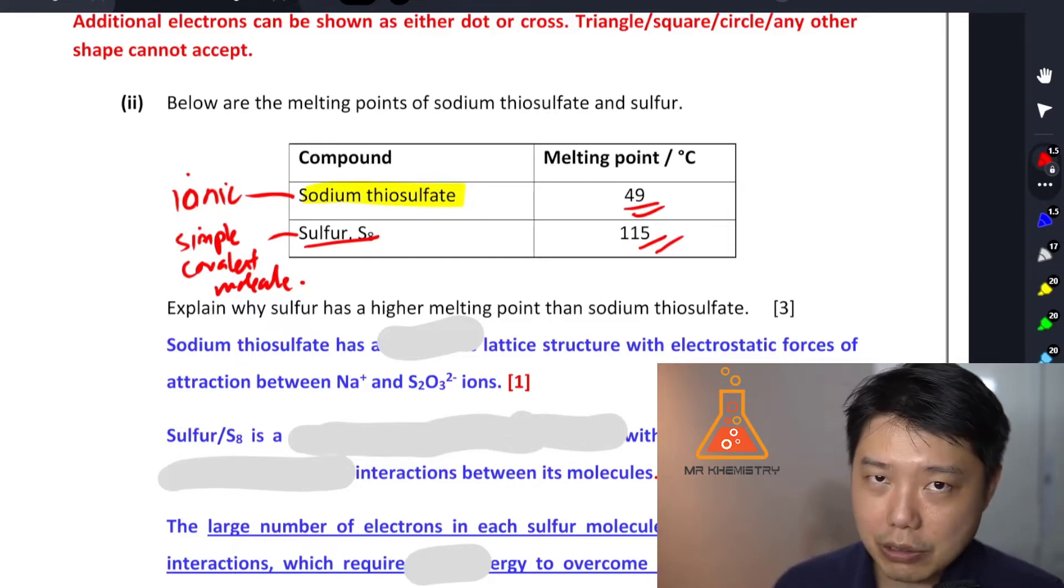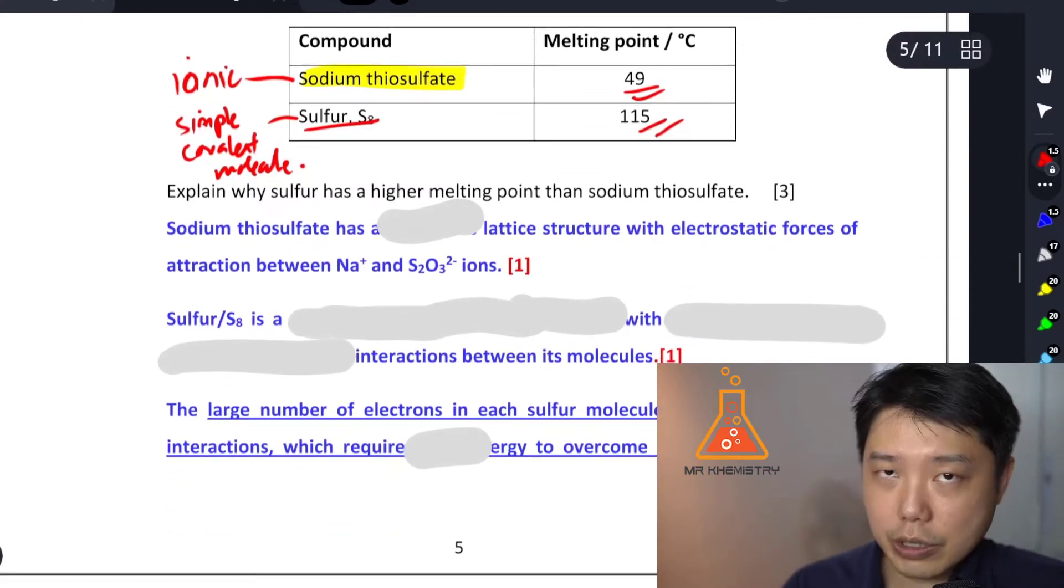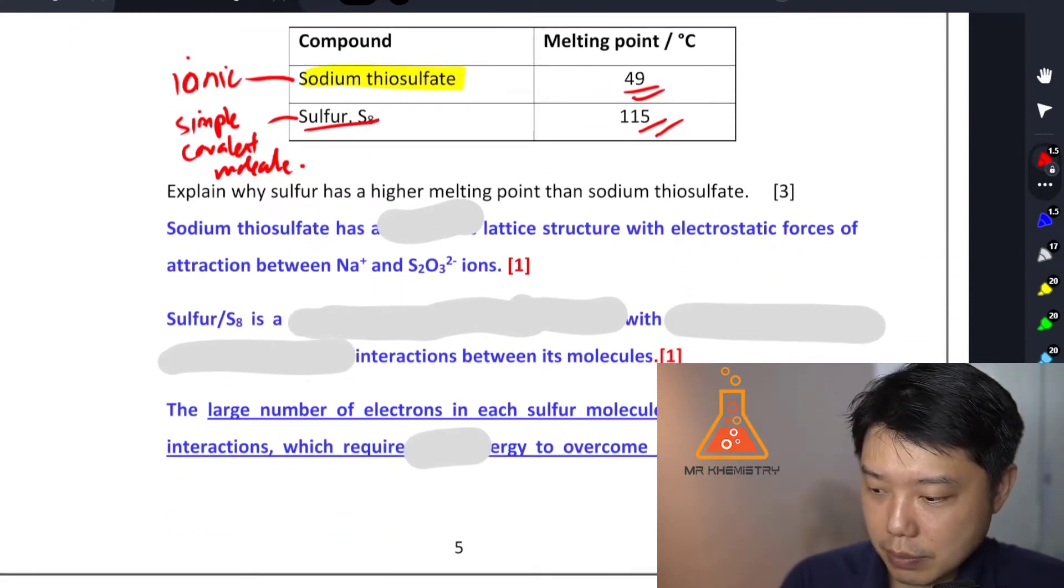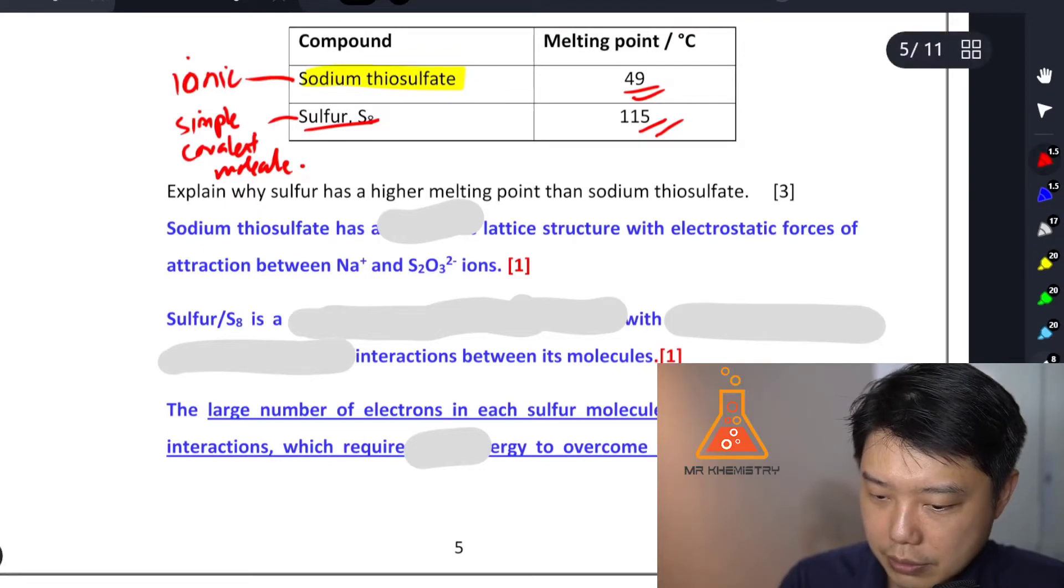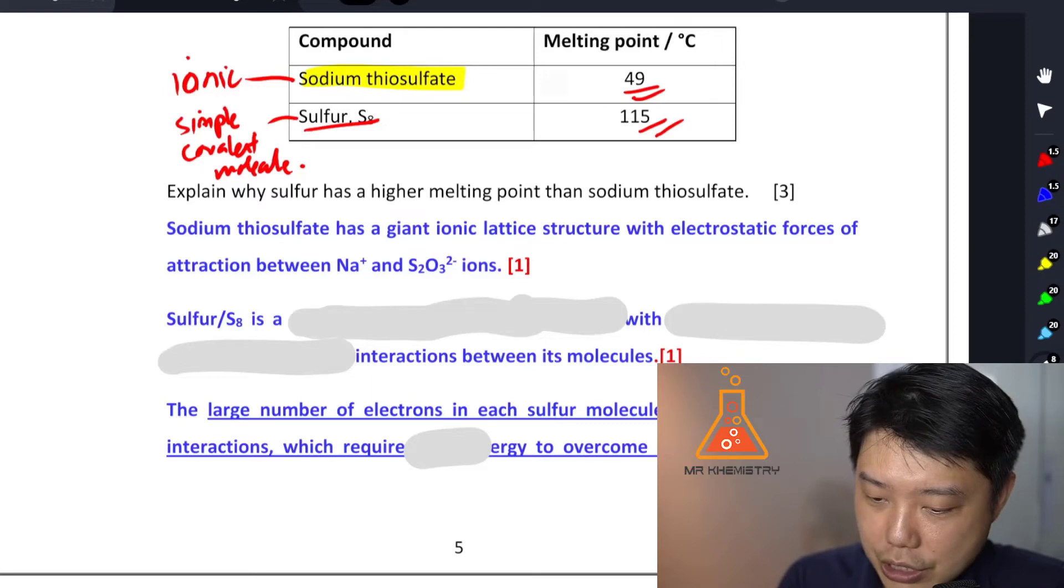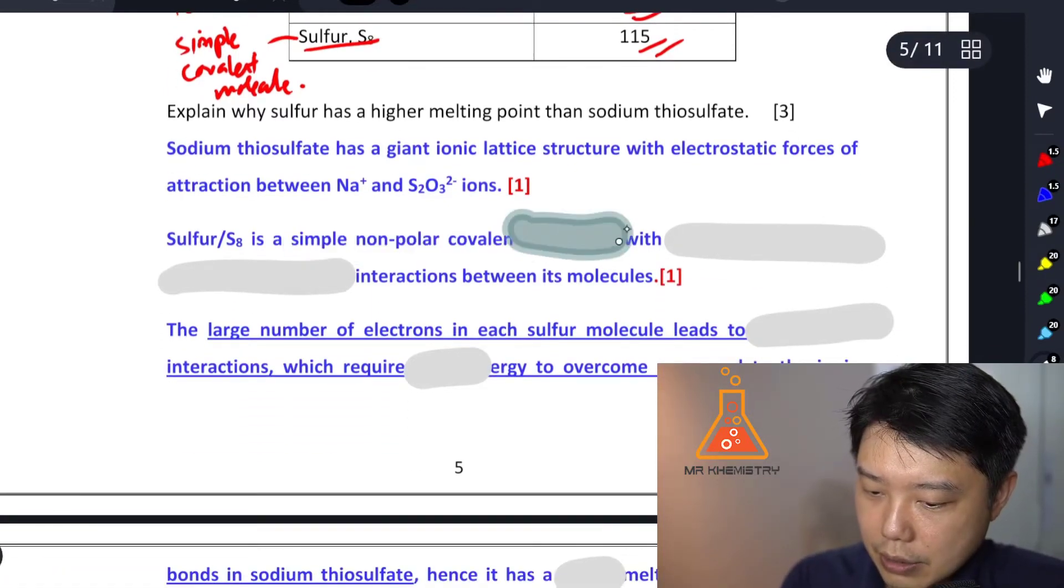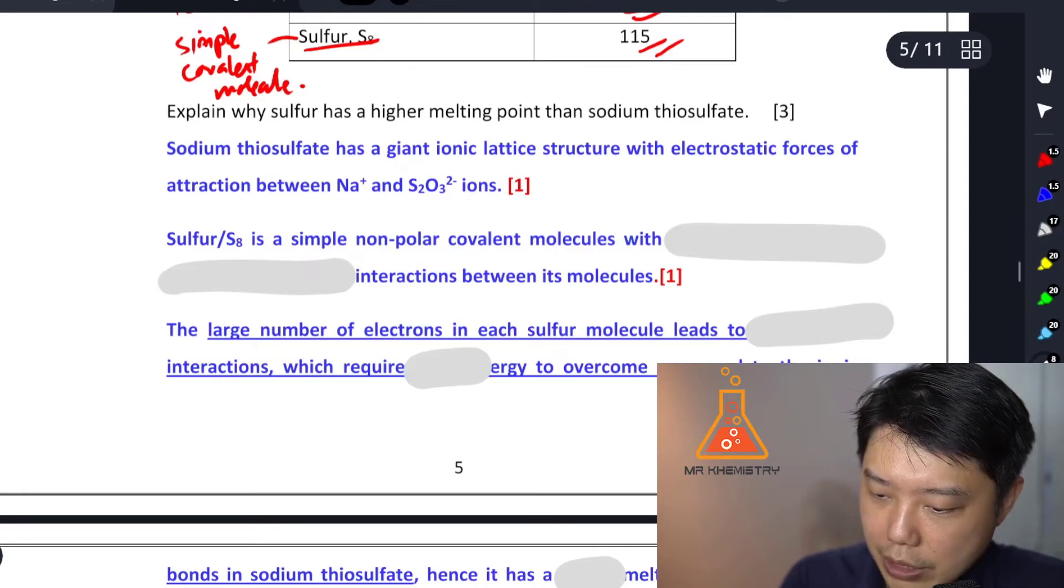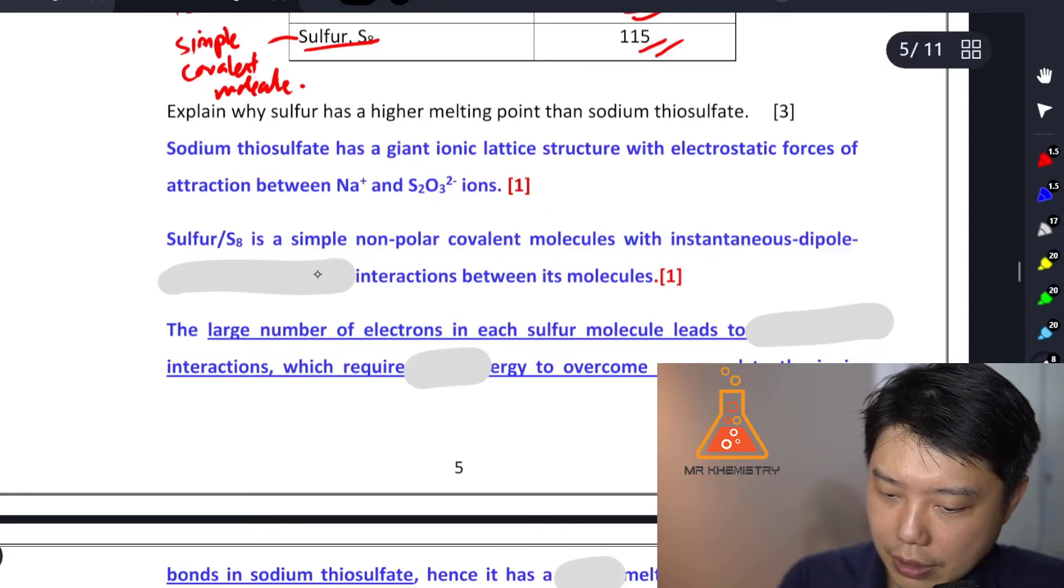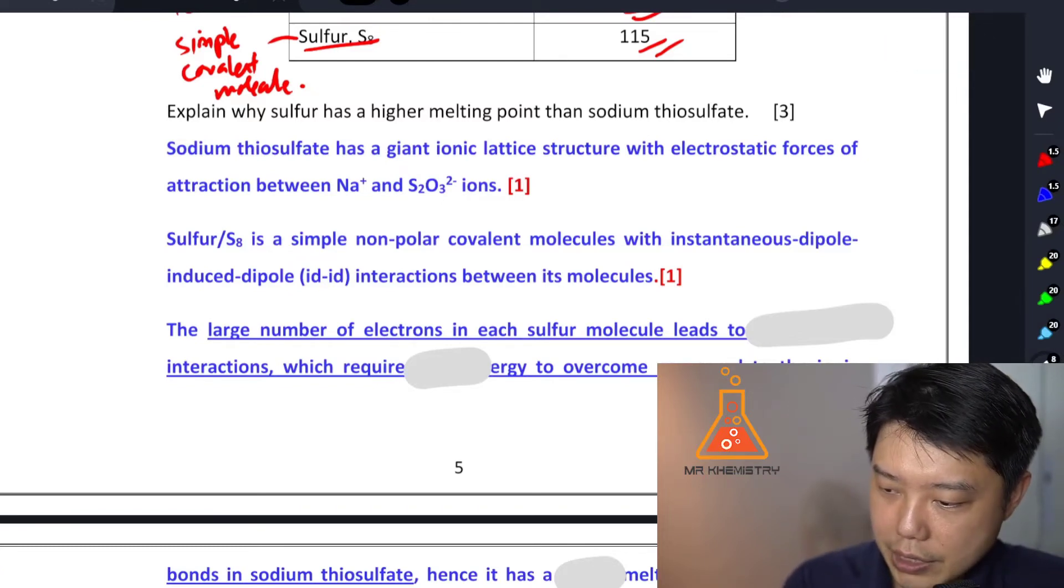You don't have to argue against it, in fact you shouldn't. You should just explain it as the data as facts. Okay, so first thing we're going to address - we're going to describe both the structure and the bonding. So thiosulfate has a giant ionic lattice structure and sulfur has a simple covalent structure and id-id because it's non-polar.